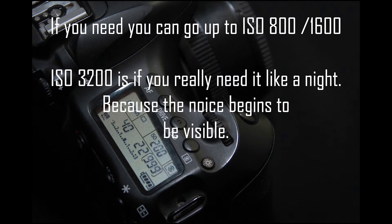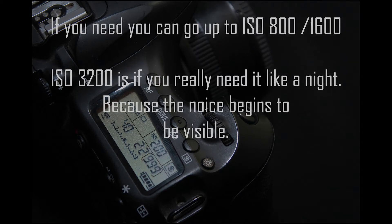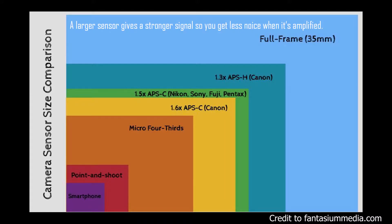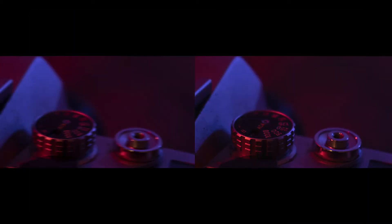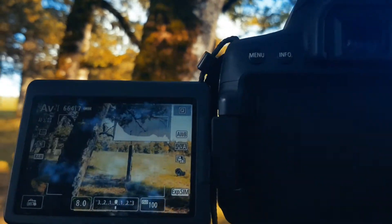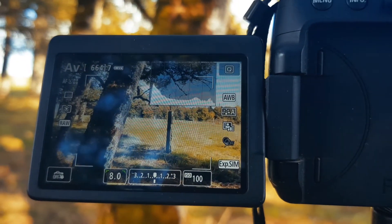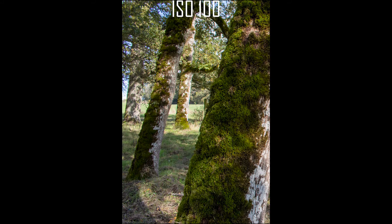You can go up to ISO 3200. If you have a full frame camera you can go even higher. It's better to have a picture with some noise than a blurry and not sharp one. The noise is less visible during the day because there is more available light.